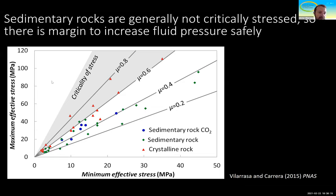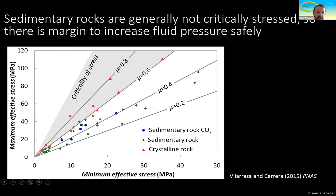Let's start with the stress state. Here you can see a literature review on several sites for different rock types, in which I plot the maximum versus the minimum effective stress. These lines represent the mobilized friction. For values higher than 0.6, we are in criticality of stress — meaning we are very close to failure conditions. The red triangles correspond to crystalline rock, and most of them are in critically stressed conditions.